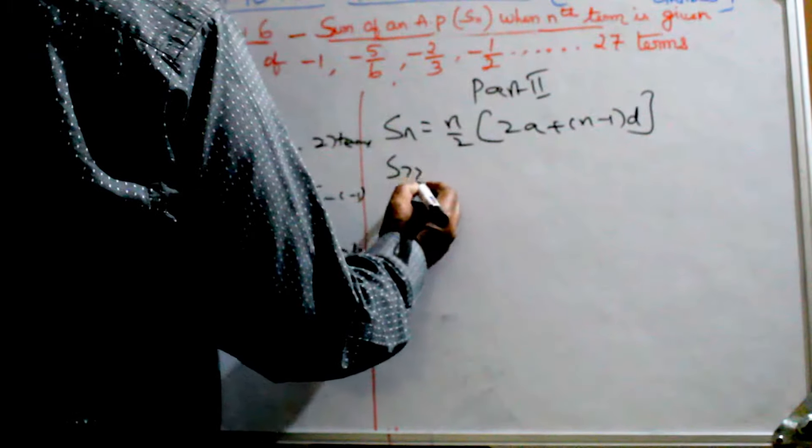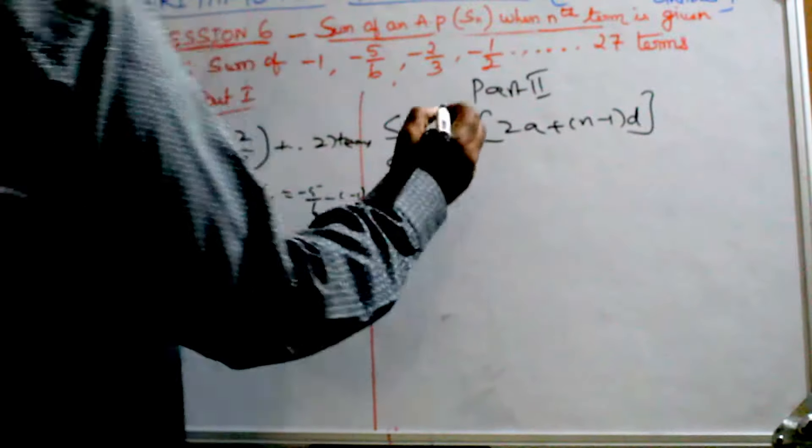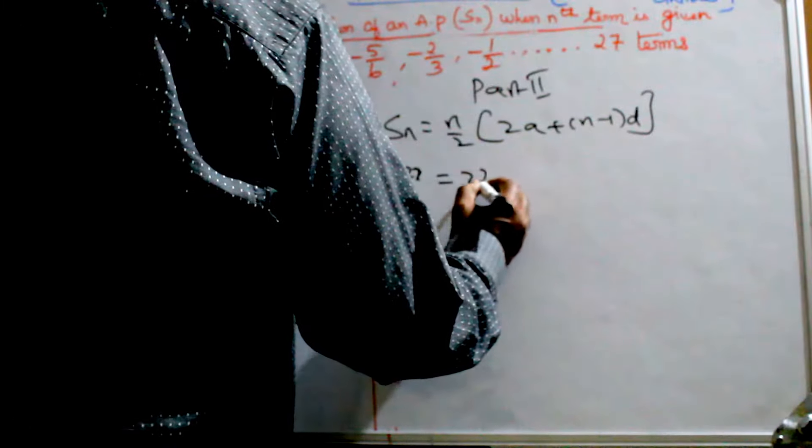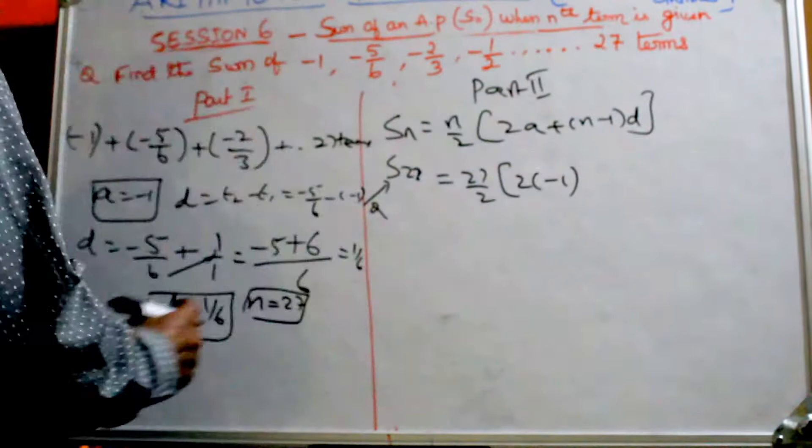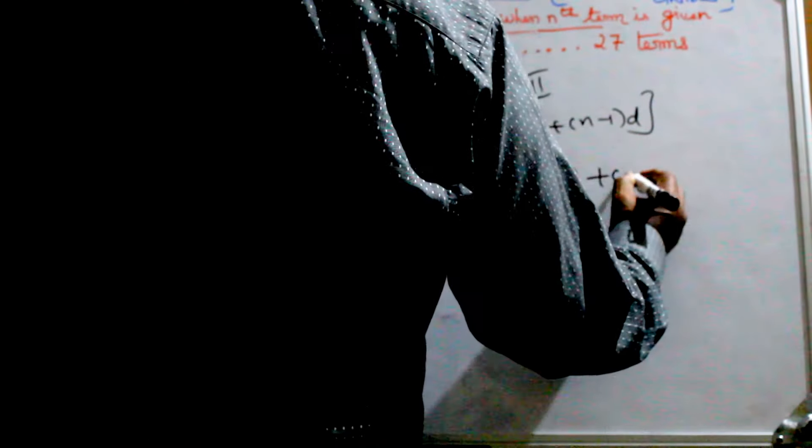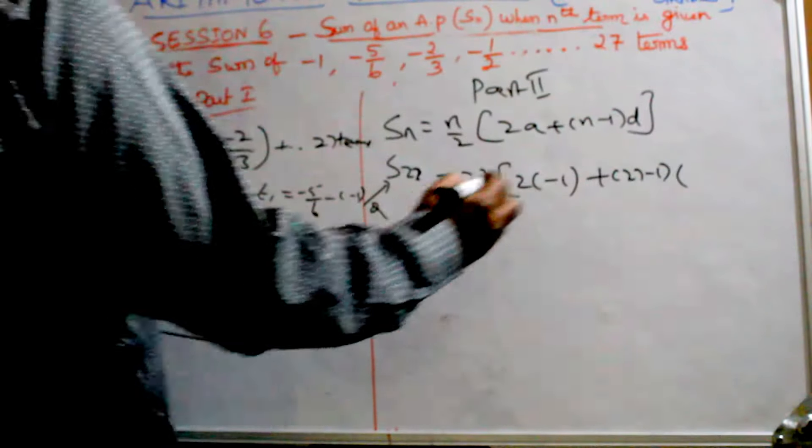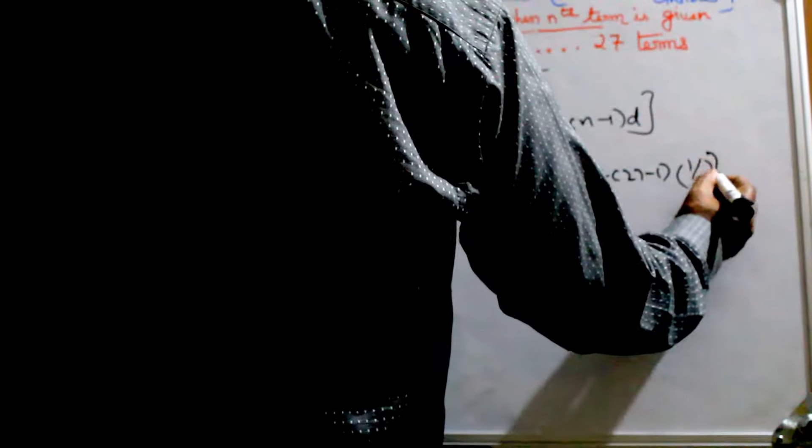Yes, 27. Sum of 27 terms. This is the question. S27 equals 27/2 times [2 times A is -1, plus (27-1) times D is 1/6].